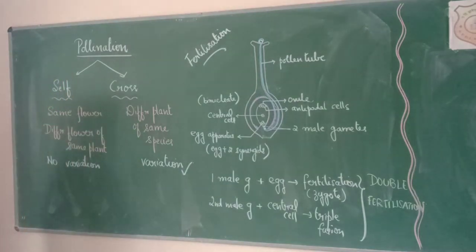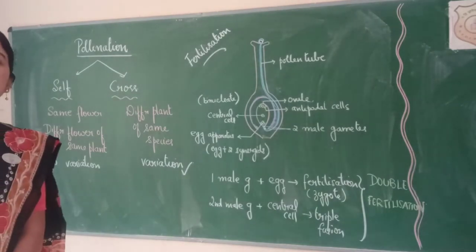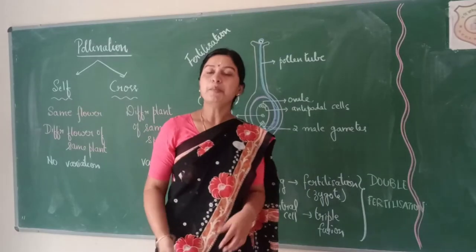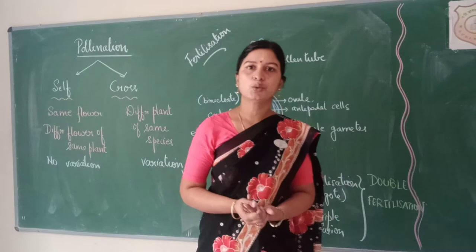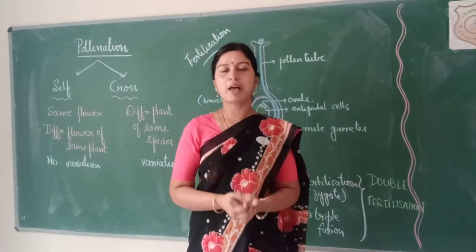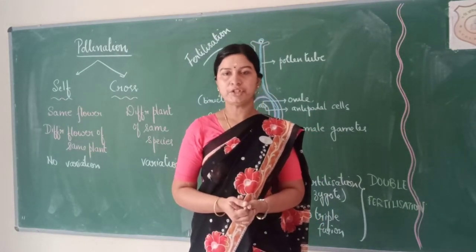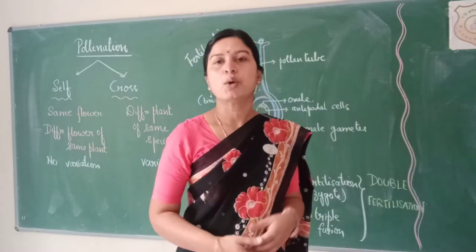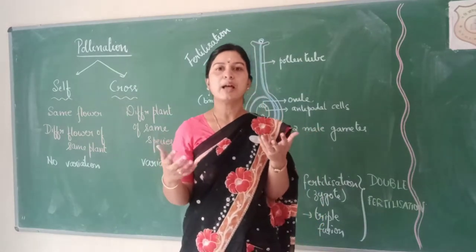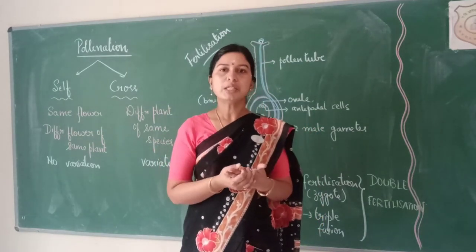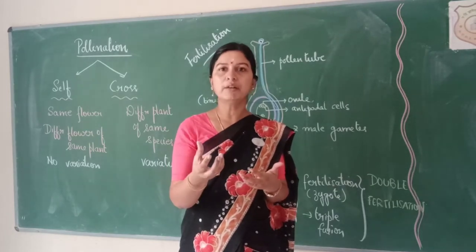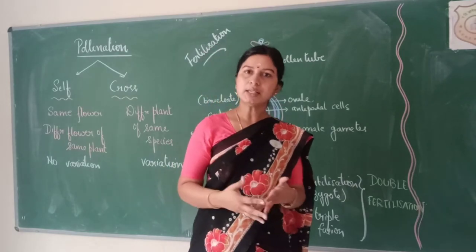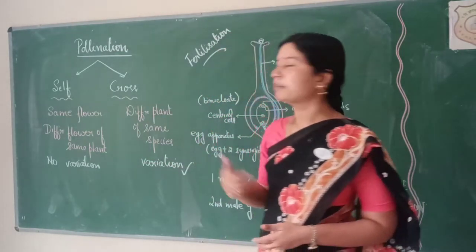Pollination can be of two types: self-pollination and cross-pollination. When pollen grains are transferred from anther to stigma of the same flower, it is termed as self-pollination. This also includes a different flower of the same plant. So if transfer of pollen occurs within the flower itself or to a different flower of the same plant, then we term it as self-pollination.